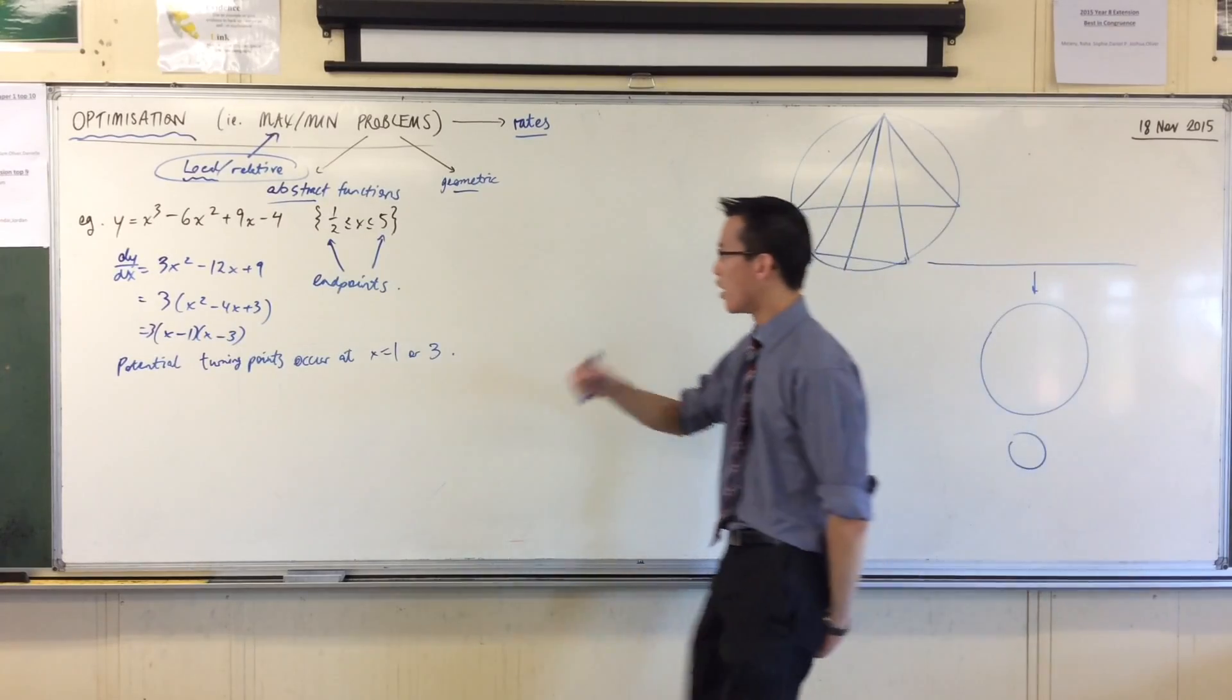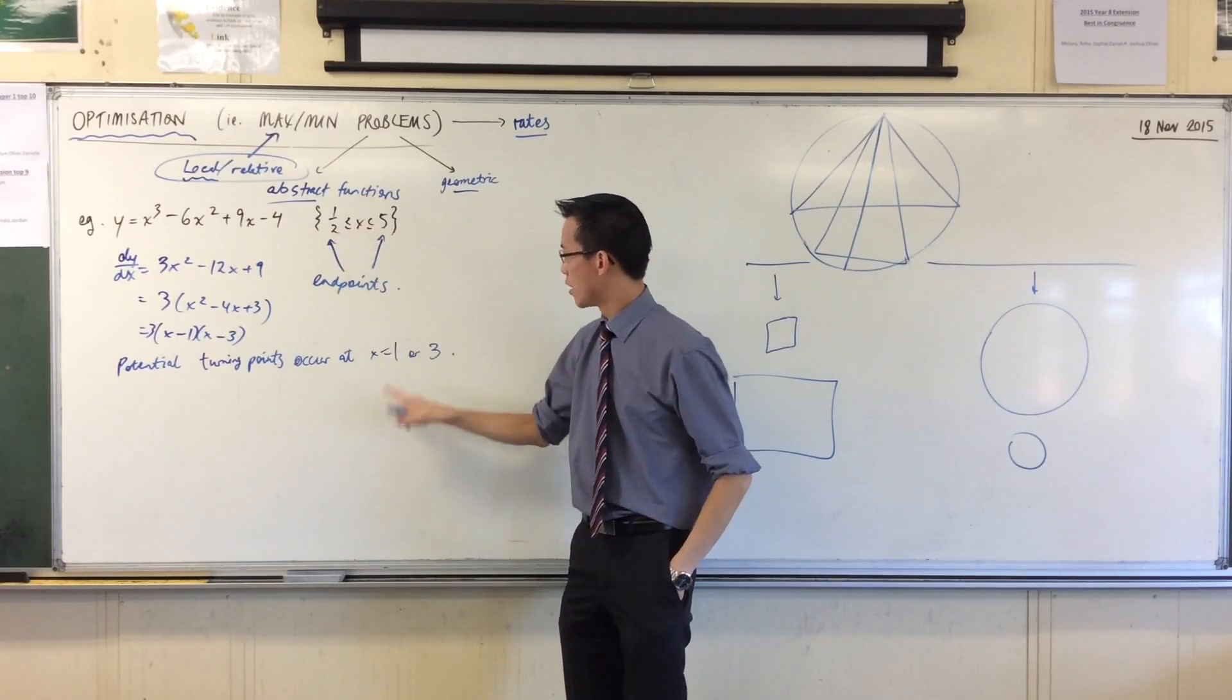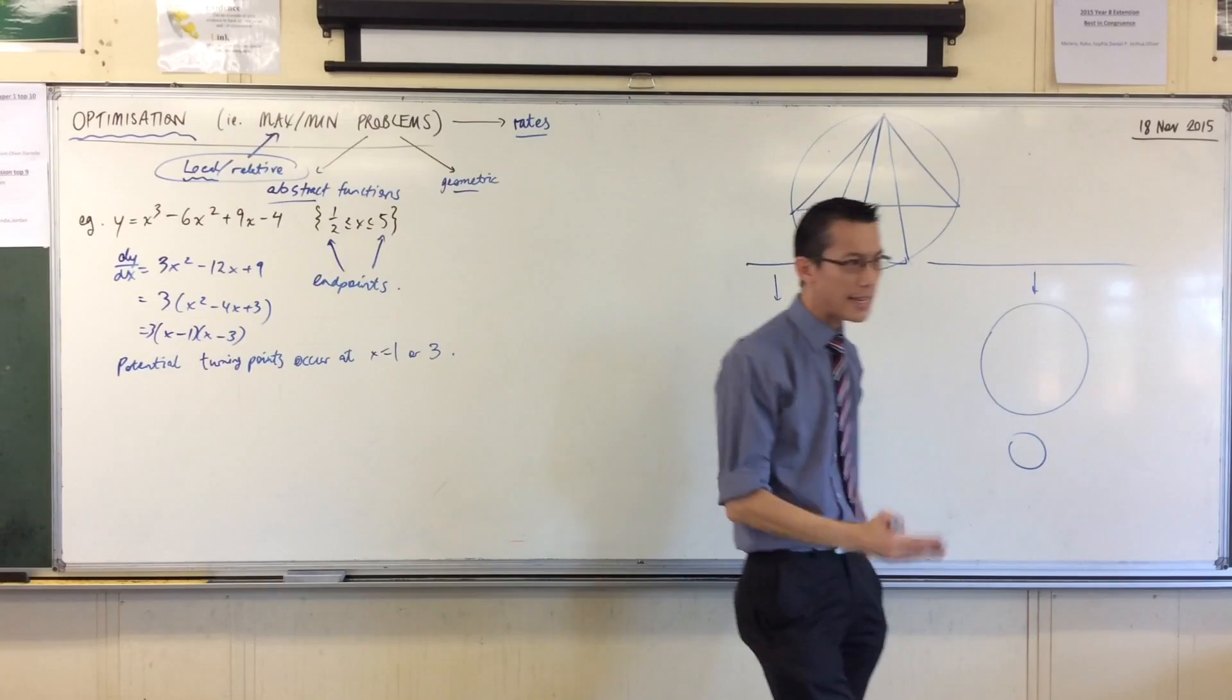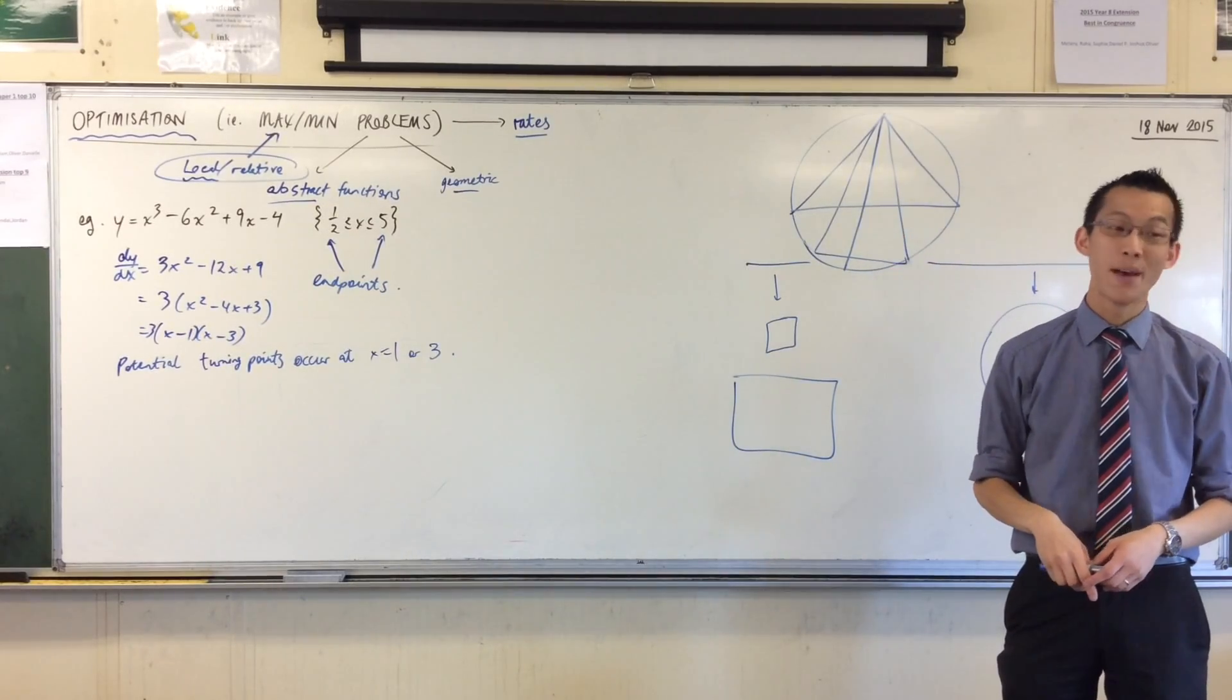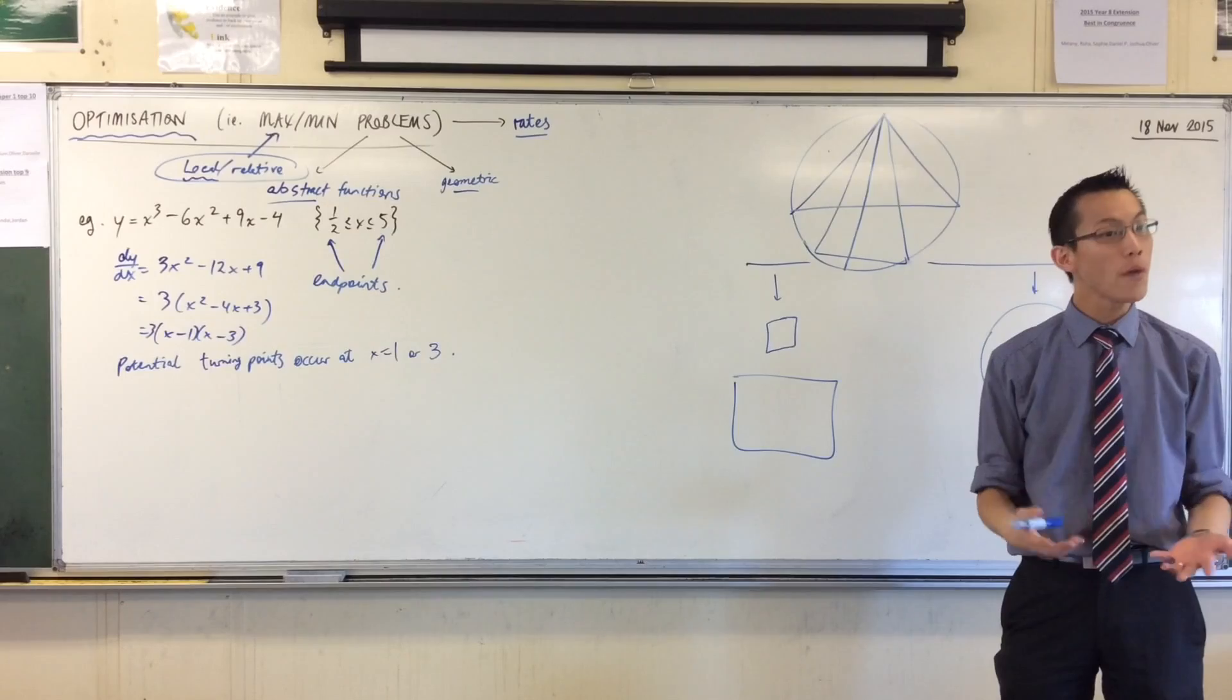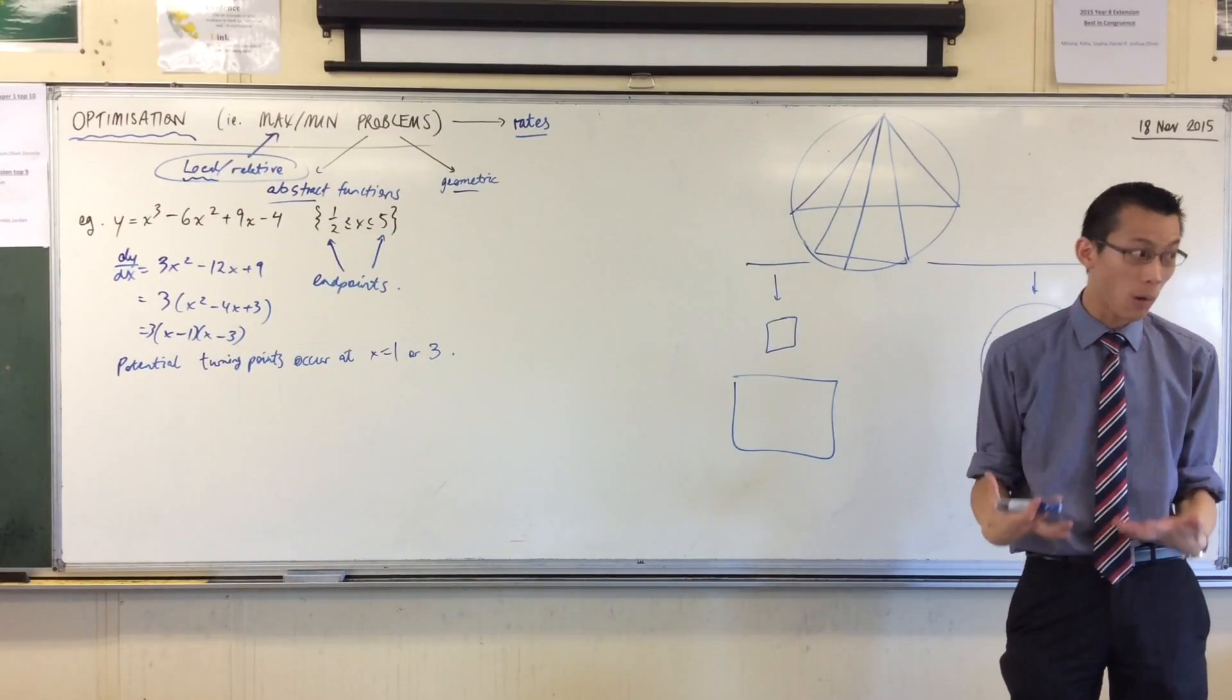Now you can see I've got 1, 2, 3, 4 values and I need to know which one is highest and which one is lowest. So I'm going to do a table of values. There's no way to get away from this. You have to test all these points.